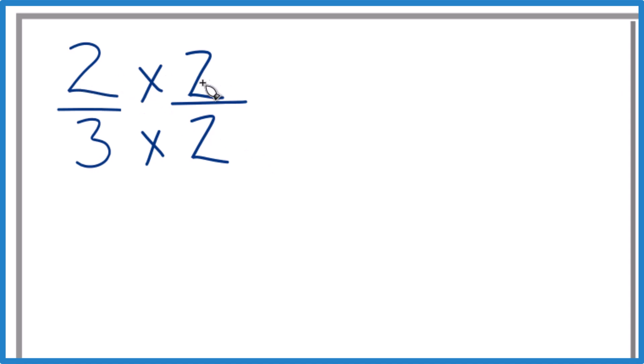2 times 2 is 4, 3 times 2 is 6. We divide 2 by 3 or 4 by 6, you get the same decimal value. They're equivalent.